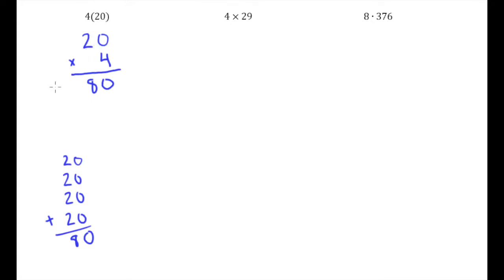Let's figure out where this answer comes from without showing all that addition. If we look here, we have four times zero — I'm multiplying four by the digit in the ones place, and that gives me zero. Then I bump over and multiply four by the two in the tens place, and that gives me my eight. Because I'm multiplying by what's in the tens place, I put the eight in the tens place.